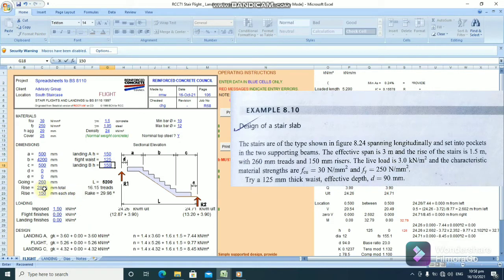Now, the total rise. In this case, the total rise for this staircase is 1.5 meters. So, it's going to be 1,500 millimeters.